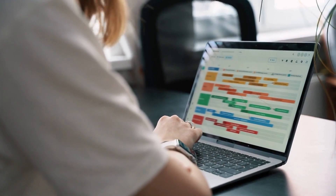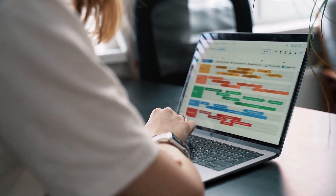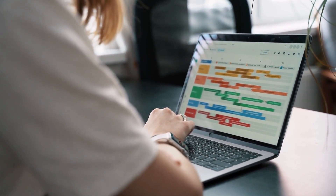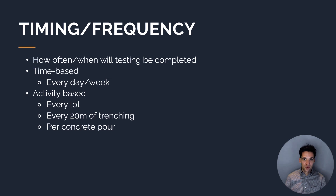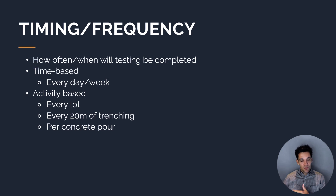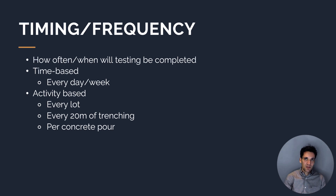Next, we need to define the timing and frequency of these checks — how often the testing will be undertaken. It could be time-based, doing checks every day or every week, or it could be activity-based, which is more common for construction works. For example, every lot of earthworks, every 20 meters of trenching, or per concrete pour — doing a pre-pour inspection, an inspection while placing the concrete, and then a series of post-pour checks.